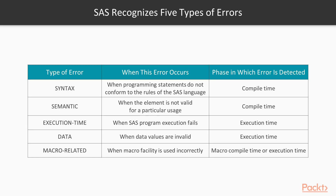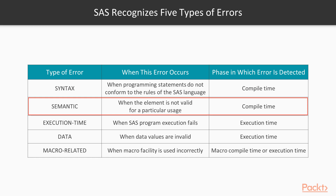SAS recognizes five types of errors. The first is a syntax error, which occurs when we are not adhering to the rules of the SAS language. For example, all statements in SAS should end with a semicolon; if you don't put a semicolon, you get a syntax error. This is detected during compile time. The second is a semantic error, which occurs when an element is not valid for a particular usage, and is also detected during compile time.